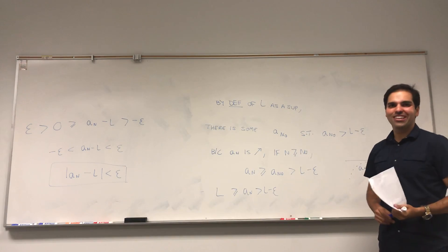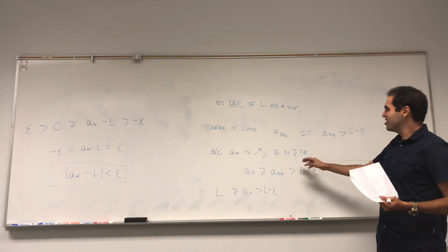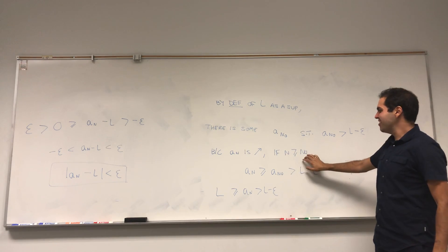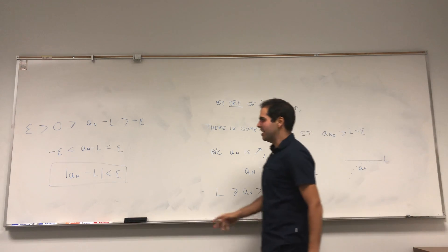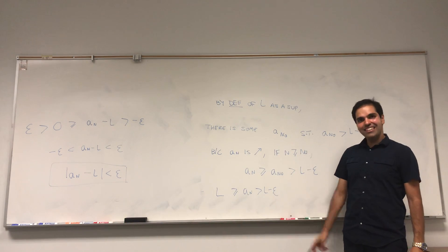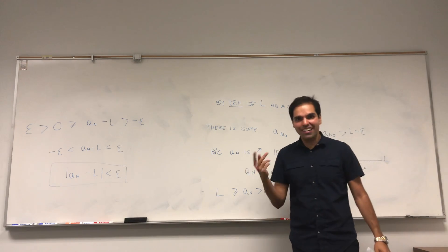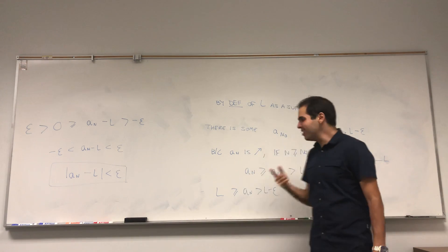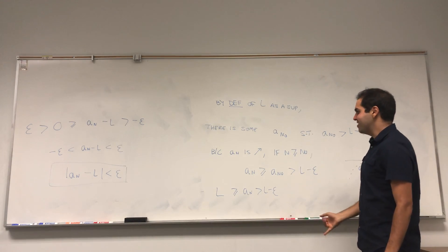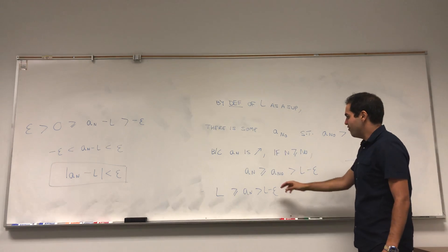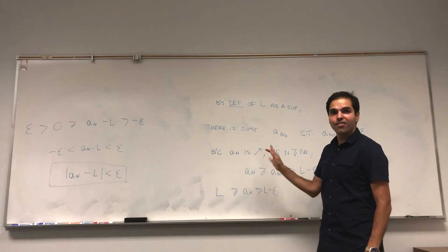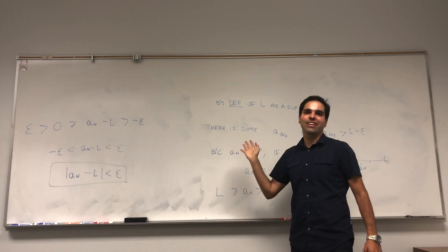That's exactly what we wanted to show. We found an n_0 via the supremum such that for n ≥ n_0, |a_n − L| < epsilon. This proof used two facts crucially: first, the sequence is bounded, ensuring L is finite; second, the sequence is increasing, ensuring that starting from n_0 we can bound a_n. If either condition fails, the theorem breaks down.